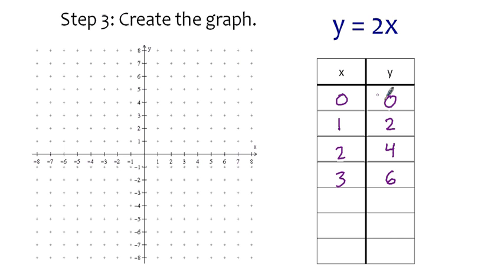Let's now go and plot the ordered pairs: 0, 0; 1, 2; 2, 4; and 3, 6.